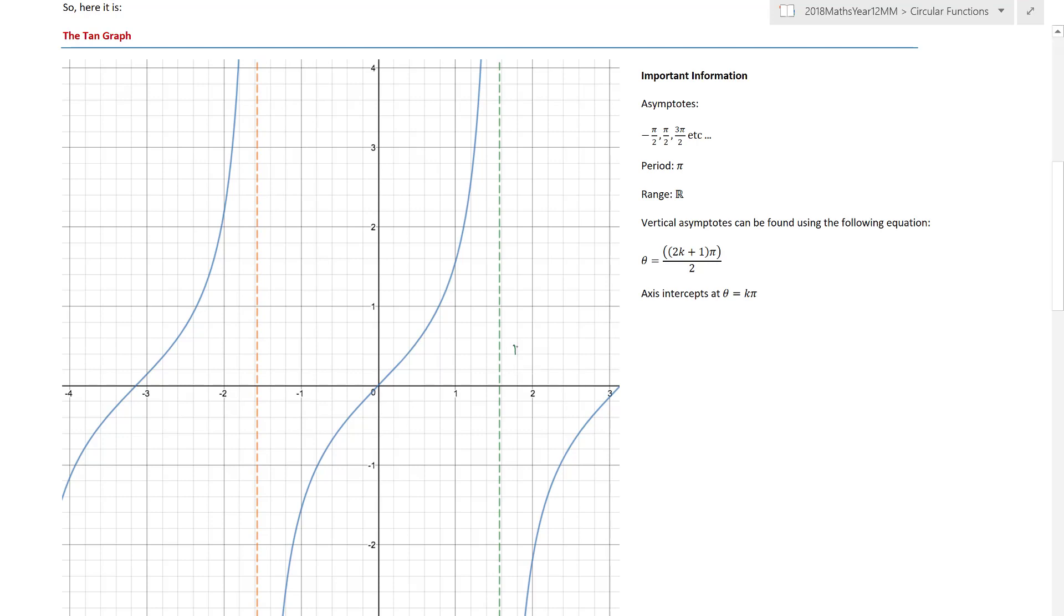Asymptotes are at pi on 2, minus pi on 2, 3 pi on 2, minus 3 pi on 2, and so it goes on. Here are some of my asymptotes. Now the period of a tan graph is actually pi, so what you notice is the difference between that asymptote and the asymptote is pi. And it's really important to note that if you know this value here, to find its similar value, you would just add on pi.